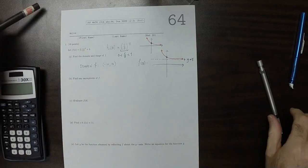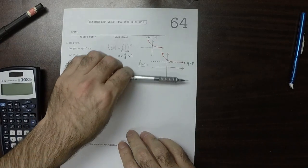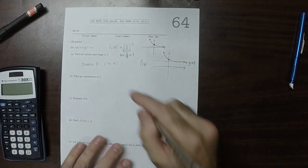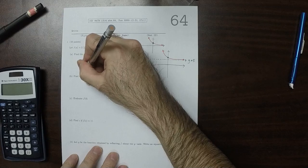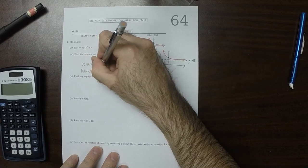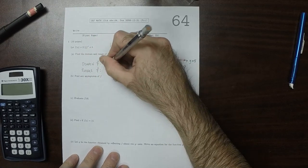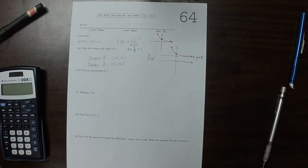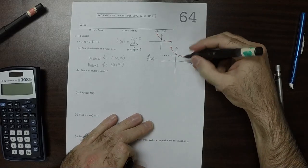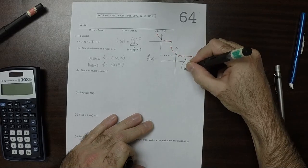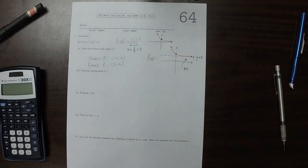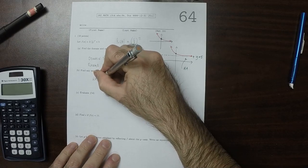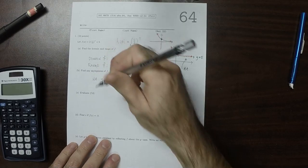That means that the range, which is to say the set of all possible y values, is 5 to infinity, not including 5. That is a horizontal asymptote. There's a horizontal asymptote of y equals 5. There are no vertical asymptotes.